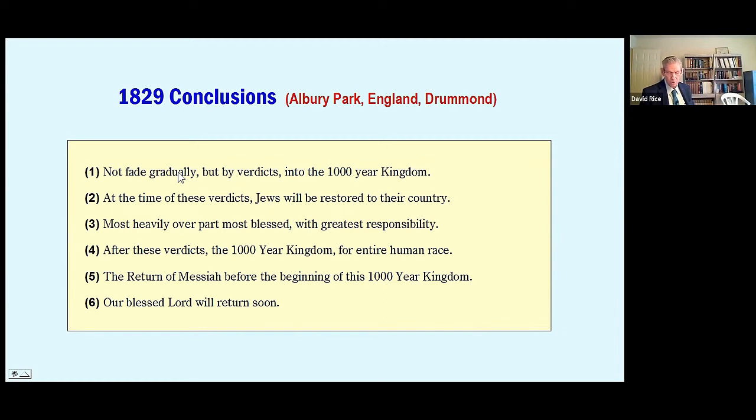Number two, at the time when these verdicts will come over Christianity, the Jews will be restored to their country. Well, remarkable. Number three, these verdicts will come most heavily on the part of the church most blessed and has therefore had the greatest responsibility. Well I think that would be papacy who had the most power and opportunity and responsibility. Four, after these verdicts the thousand-year kingdom will commence for the entire human race, even for the unwitting creation. Now that's pretty good.